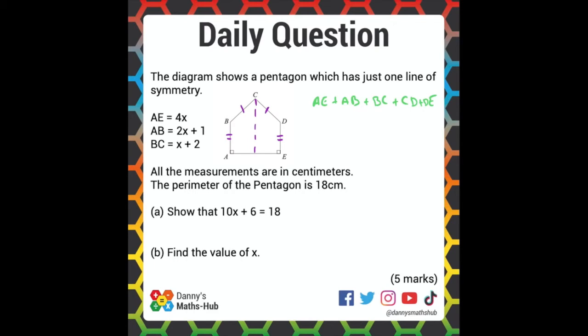Well, we know AE is 4X, we know AB is 2X plus 1, and we know BC is X plus 2. We know that CD has to be equal to BC, so we know that's also X plus 2. And we know that DE has to be equal to AB, which is 2X plus 1.